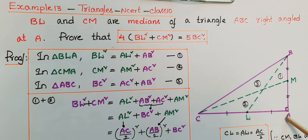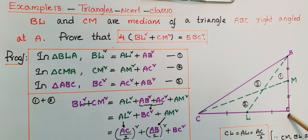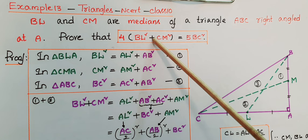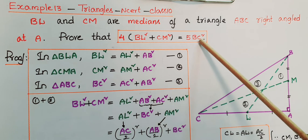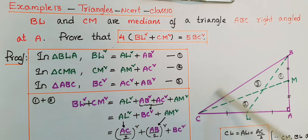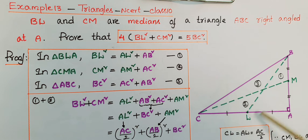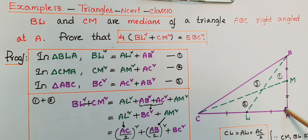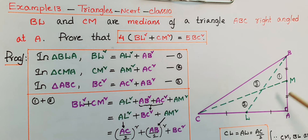So CL equals LA (since CM is a median that divides this side into two equal parts), and AM equals BM. We have to prove that 4(BL² + CM²) = 5BC². BL, CM, and BC are sides of their respective triangles. You have to consider three triangles, and these three triangles are right triangles because the angle at A is 90 degrees.